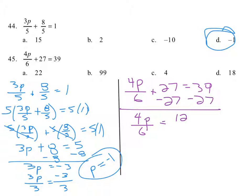So, if you want, you could multiply both sides by 6. I'm going to multiply by the reciprocal. 6 fourths times 4 sixths p equals 6 fourths times 12.